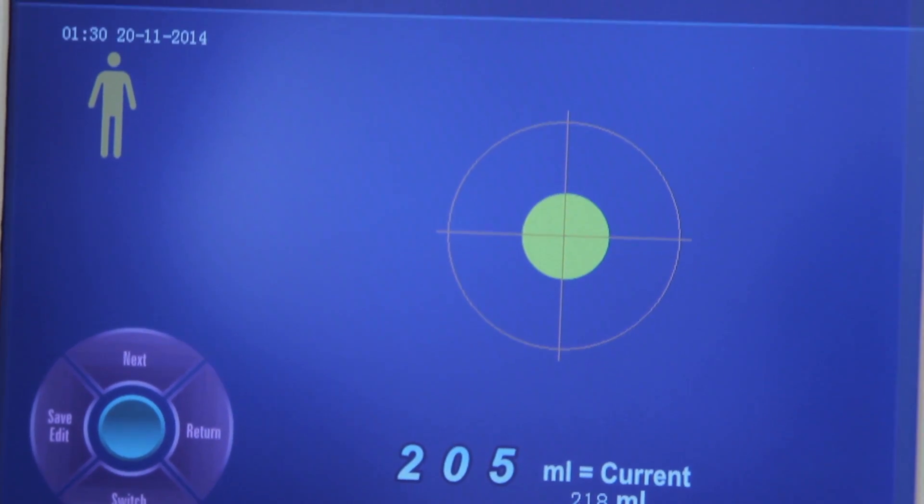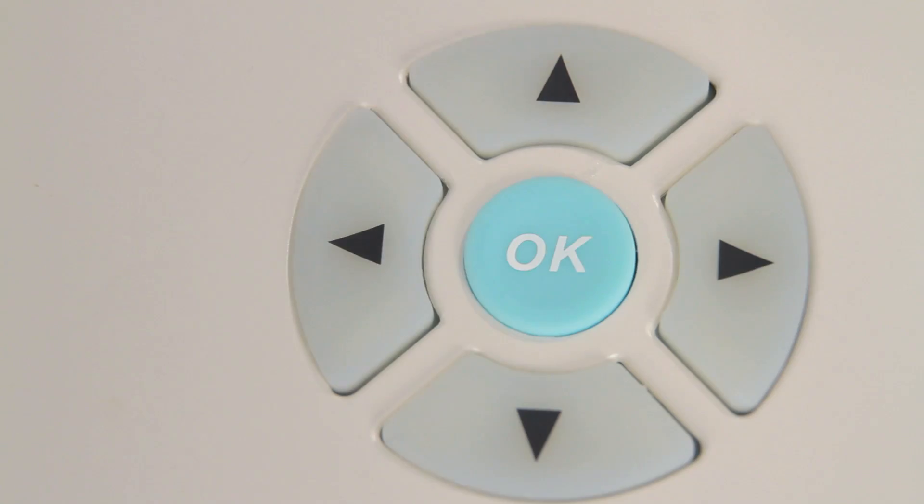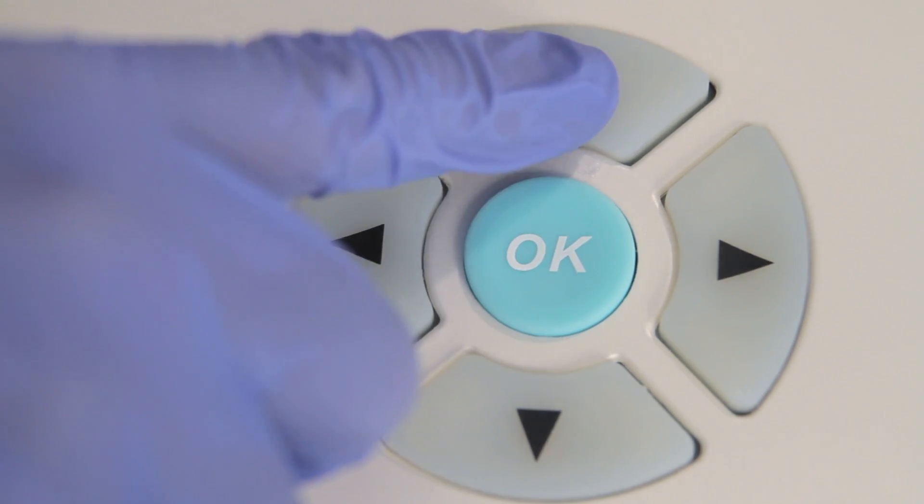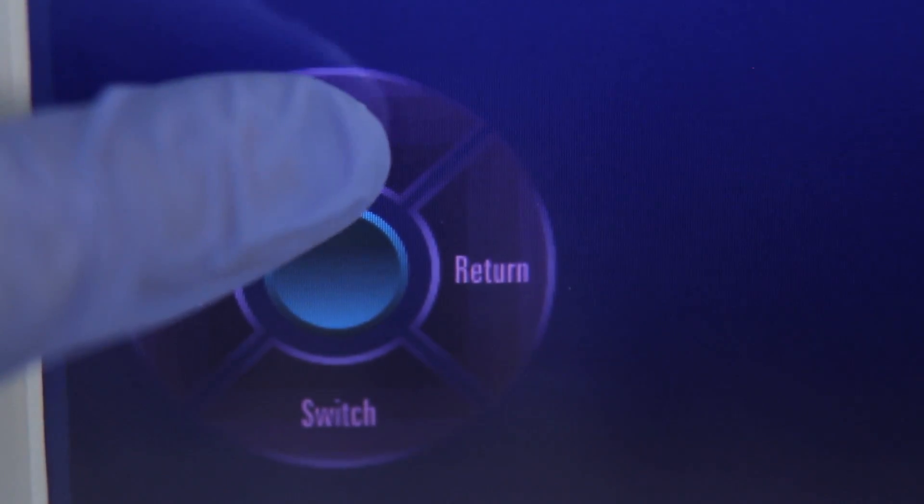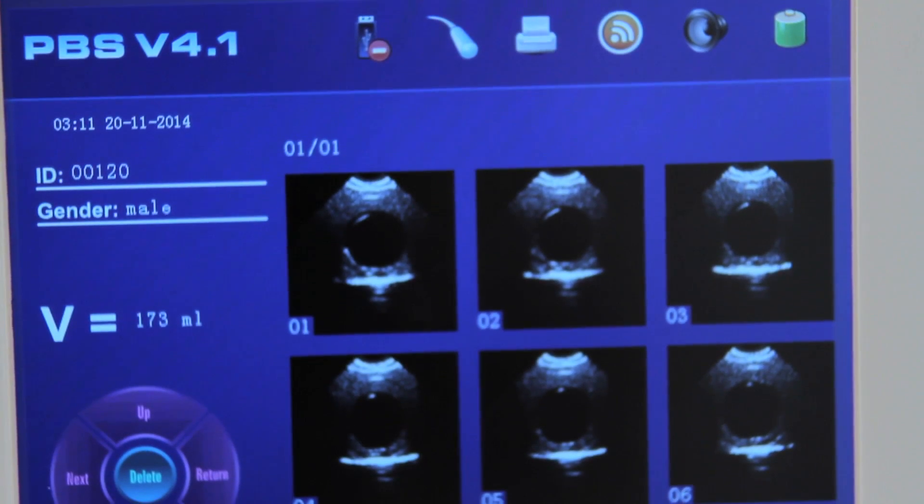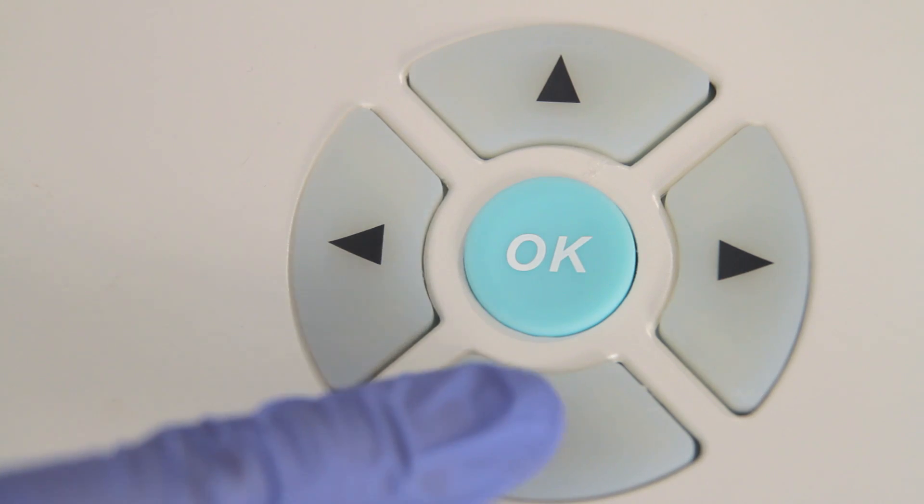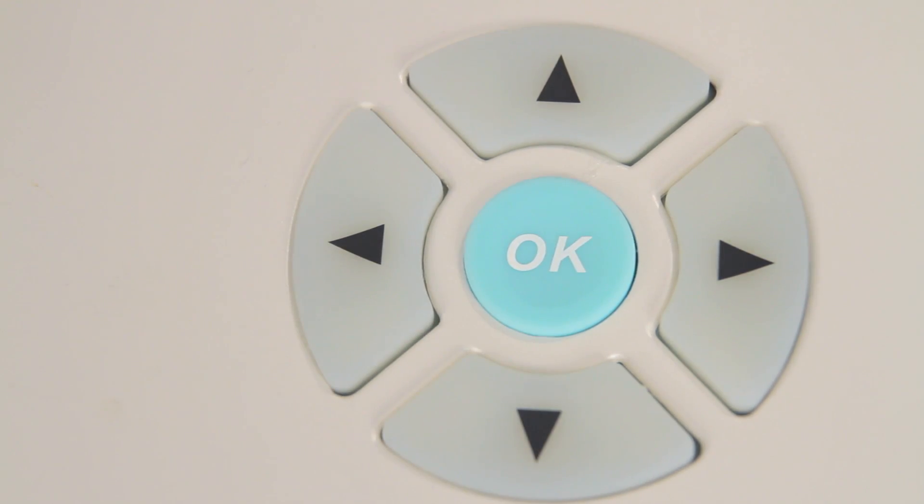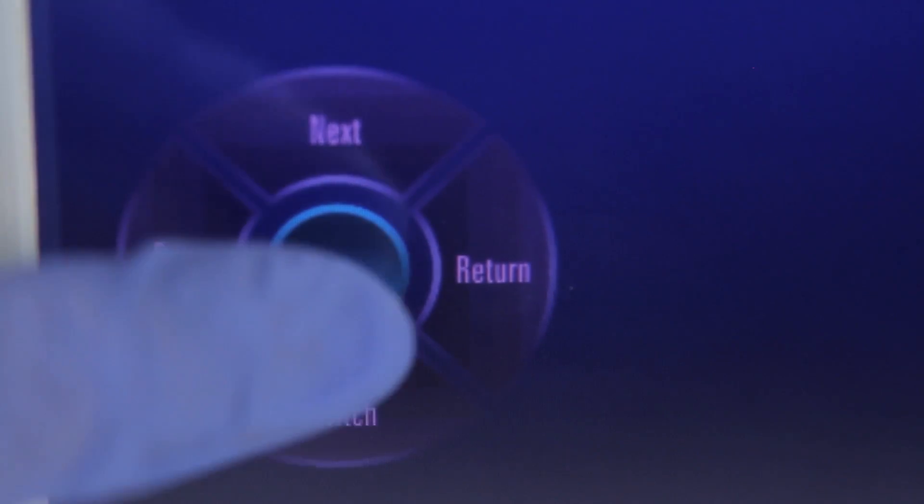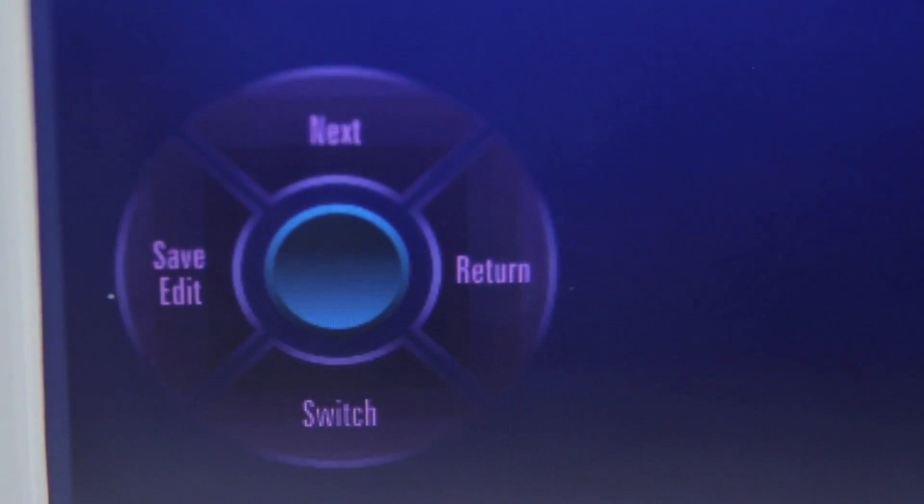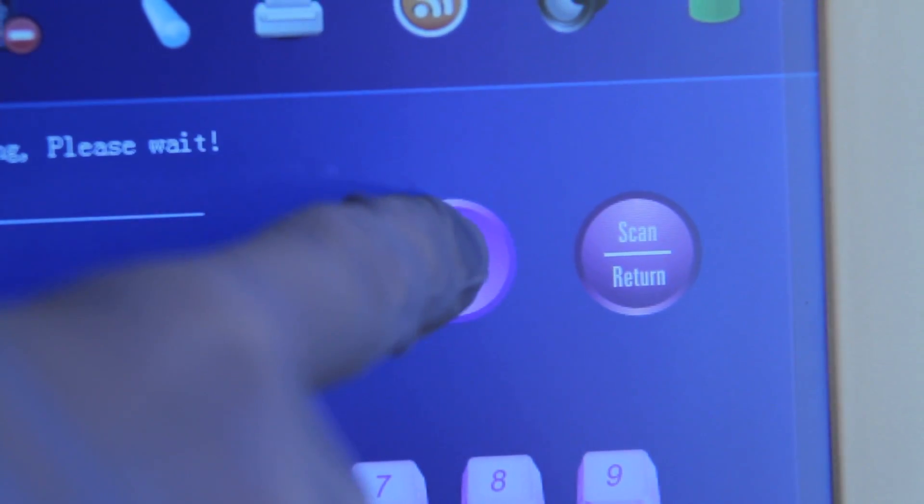The scan results screen displays the results of the scan. Press the up directional key or touch the next functional key to toggle between the scanned images. Press the down directional key or touch the switch functional key to switch between grayscale and two color images. Press the printer key on the control panel to print the current images.